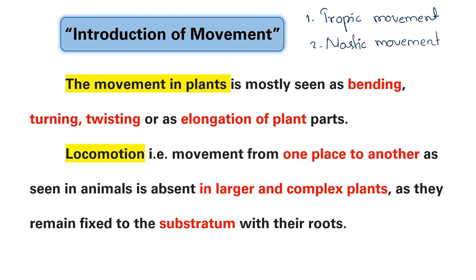Locomotion. Movement from one place to another is absent in larger, complex plants. As they remain fixed to the substrate, locomotion from one place to another is not observed in higher plants.